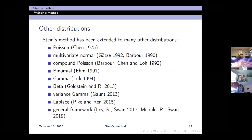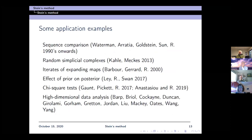Stein's method has been extended to many other distributions: Poisson, multivariate normal by Barber, compound Poisson by Barber, Chen and Lou, binomial, gamma, beta, variance gamma, Laplace. There is also a general framework going back to Stein, worked on with Yves Swan, Christophe Ley, and Guillaume Mijoule. It has been applied in a large number of areas: sequence comparison, random simplicial complexes in topological data analysis, iterates of expanding maps, dynamical systems, Bayesian analysis, effect of prior and posterior, statistical tests, chi-square tests, and high-dimensional data analysis, or what some call machine learning. The last part of this talk will be in the region of high-dimensional data analysis.